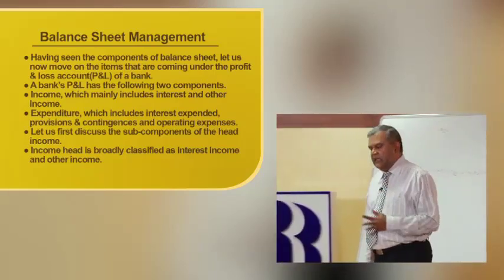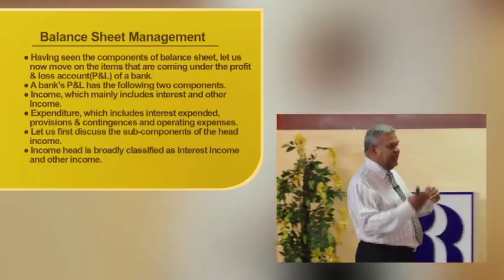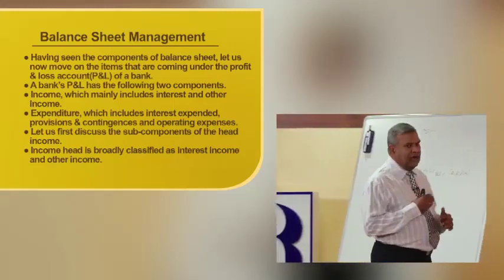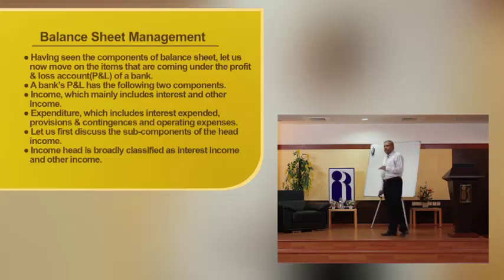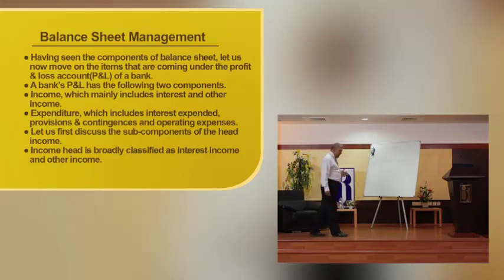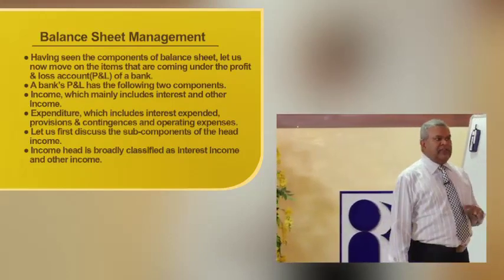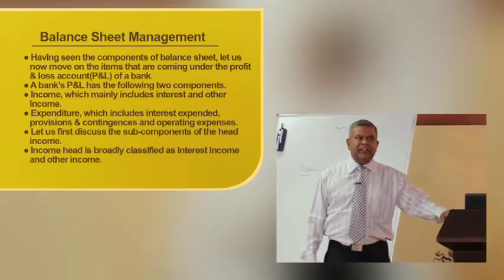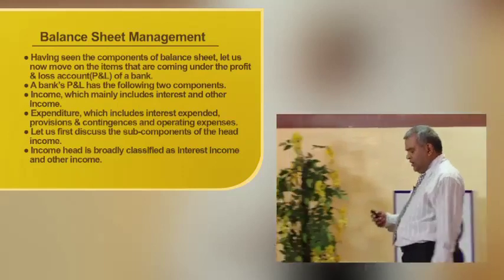On the expenditure side, the major chunk of expenditure is interest paid on deposits. Naturally, if you net the income received against the income paid, there should be a surplus — that is called net interest income. The expenditure includes interest expenditure, provisions and contingencies, and operating expenses. The first item on the expenditure side is interest paid on deposits; the next is provisions and contingencies; and operating expenses are essentially administrative expenses like salary and so on. Income is broadly classified as interest income and other income, which is also called non-interest income.